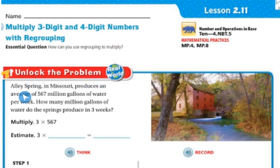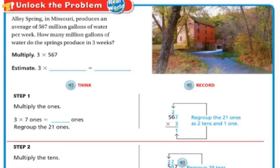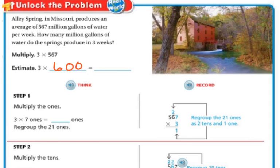Let's unlock the problem. Alley Spring in Missouri produces an average of 567 million gallons of water per week. How many millions of gallons of water do the springs produce in three weeks? In order to find out, we're going to multiply three times 567. Estimating is a good way to check our answer. 567 is closer to 600, so three times 600 — three times six is 18 — with two zeros, my answer should be close to 1,800.